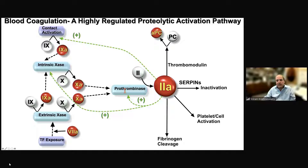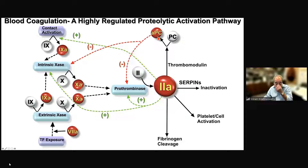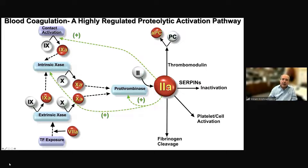This greatly accelerates the reaction rate and flux towards thrombin formation. Later on in the process, thrombin binds thrombomodulin, catalyzes APC formation, and APC inactivates the same cofactors that were initially activated by thrombin, thereby decreasing flux to thrombin formation. So these cofactors play essential roles in regulating clotting, and the one I'm going to talk about today is associated with the enzyme complex that converts prothrombin to thrombin.